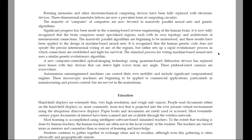Significant progress has been made in the scanning-based reverse engineering of the human brain. It is now fully recognized that the brain comprises many specialized regions, each with its own topology and architecture of inter-neuronal connections. The massively parallel algorithms are beginning to be understood, and these results have been applied to the design of machine-based neural nets. It is recognized that the human genetic code does not specify the precise inter-neuronal wiring of any of the regions, but rather sets up a rapid evolutionary process in which connections are established and fight for survival. The standard process for wiring machine-based neural nets uses a similar genetic evolutionary algorithm.